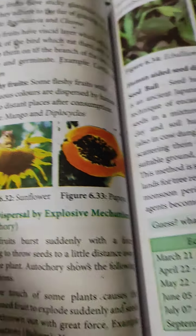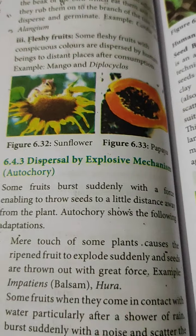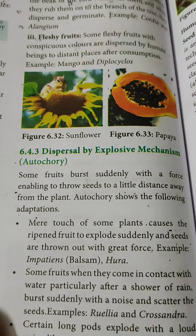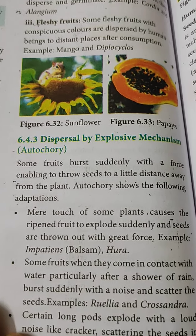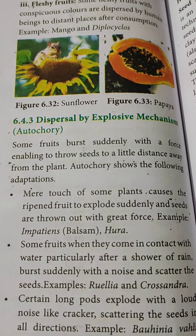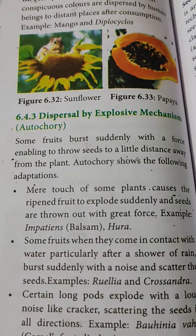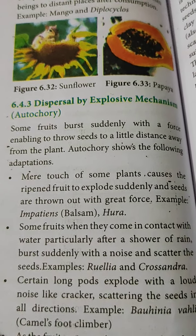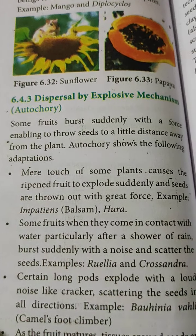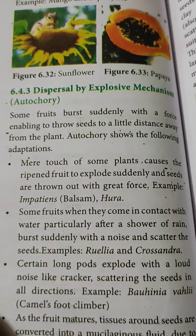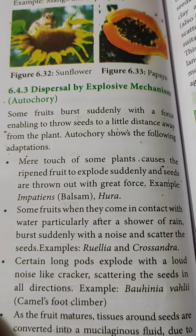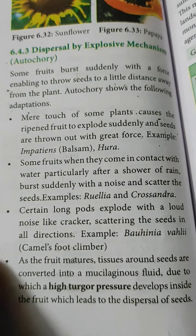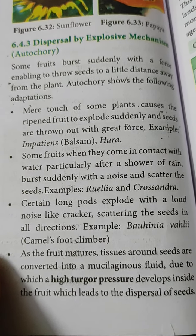Dispersal by explosive mechanism, called autocory, is seen in Impatiens balsamina (balsam plant). Some fruits burst suddenly with force, throwing seeds a distance away from the plant. A mere touch of some plants causes the ripe fruit to explode and seeds are thrown out with great force. Some fruits burst suddenly with a noise when they come in contact with water, particularly after a shower of rain, scattering the seeds. Examples: Doelia, Crossandra. Certain long pods explode with a loud noise like crackers, scattering seeds in all directions.